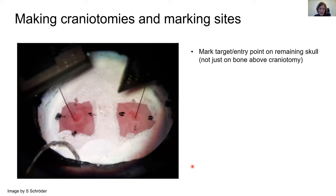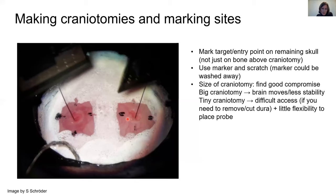A few words about making craniotomies and marking sites. Make sure you really mark the sites outside the craniotomy so you know where to place your probe. If you just mark it on top of the site, then this will be gone after you've done your craniotomy. You can use markers, pens or you scratch with a needle into the bone, which cannot be washed away. You should think about the size of your craniotomy and find a good compromise. If you do a very big craniotomy, then you have lots of space, but the brain can move a lot more, which will give you less stability. If however, you do a very tiny craniotomy, then this will be very difficult to access, especially if you may need to remove or cut the dura or if you have some bone growth.